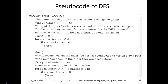In the DFS pseudocode, initially mark all vertices with value zero, indicating they have not been visited. Use a global variable count initialized to zero. For each vertex V in vertex set V, if V is marked with zero, invoke DFS with that vertex V. Then increment the count by one and mark V with count. For each vertex W adjacent to V, if W is marked with zero, invoke DFS with node W.